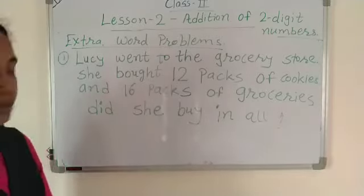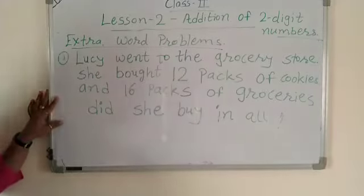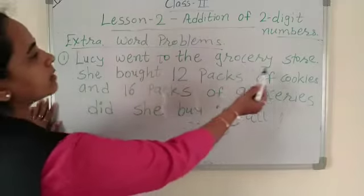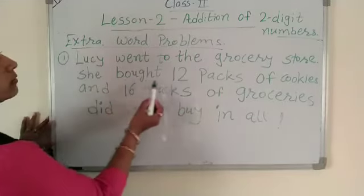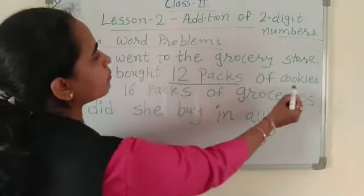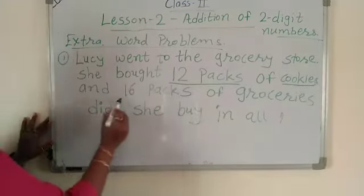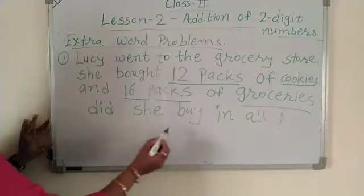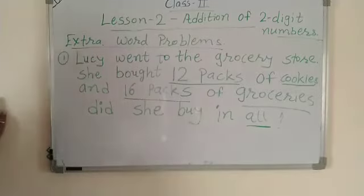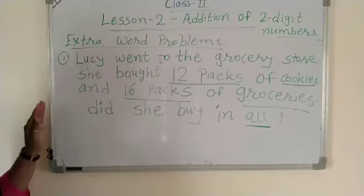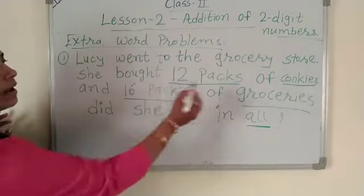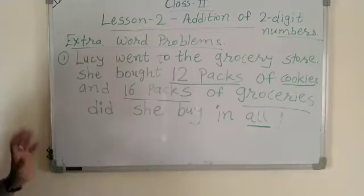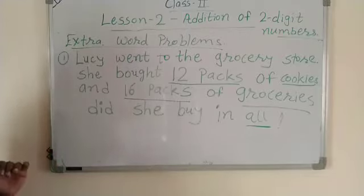In the first one, read first. Lucy went to the grocery store. She bought 12 packs of cookies and 16 packs of groceries. How many did she buy in all? First, read the problem and underline the key words: 12 packs, 16 packs, and 'in all.' 'All' means altogether, so we use addition.